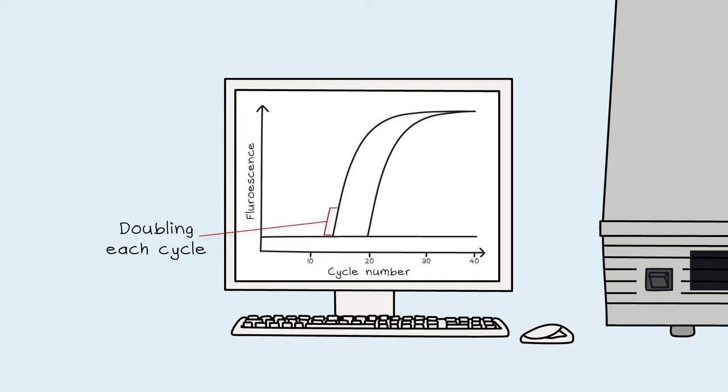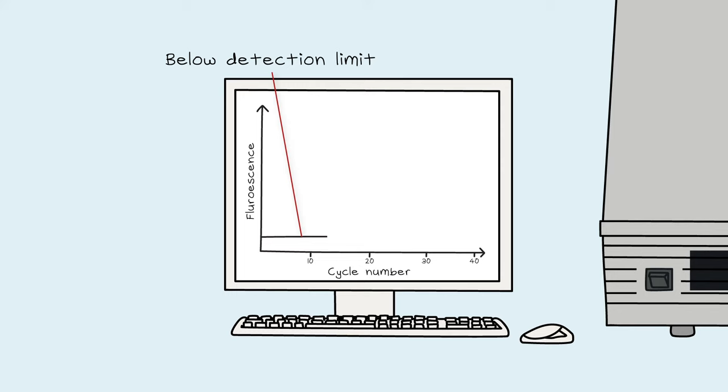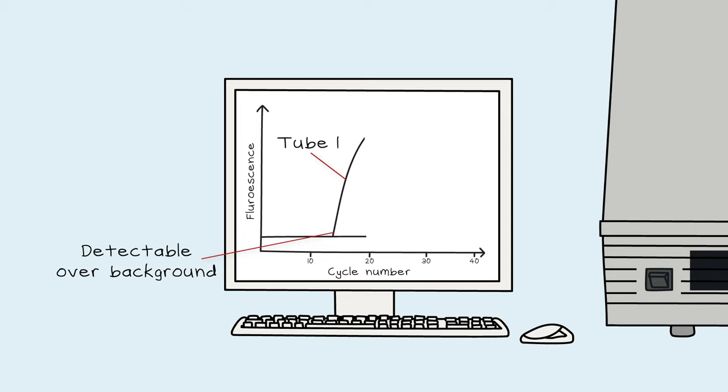In the first few cycles of the qPCR, the amount of fluorescence is below the camera's detection limit. Then, as DNA accumulates, the fluorescence in the tube becomes detectable over the background. At this point, the fluorescence doubles each cycle. This doubling is the exponential growth phase. As millions of copies of DNA accumulate, the reaction slows down to the linear rate and then reaches a plateau.